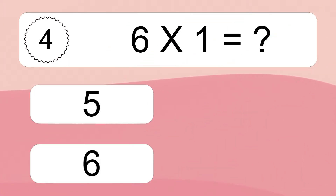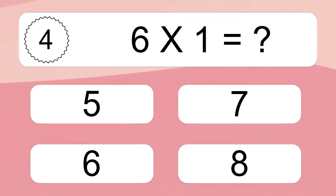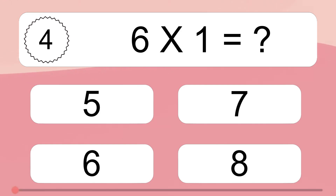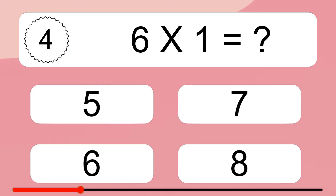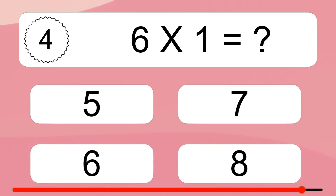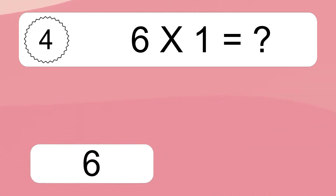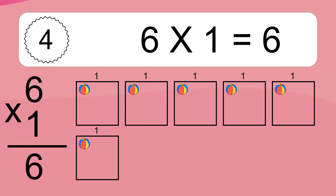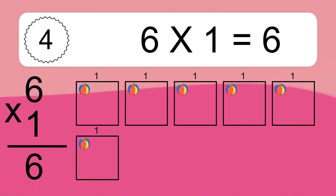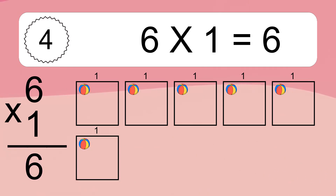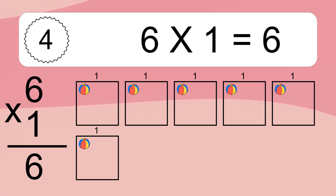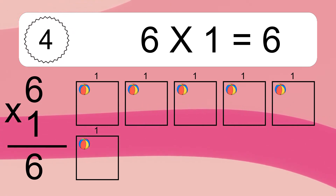Six times one equals what? Six times one equals six. We have six boxes, and each box has one colorful ball inside. If you count all the balls in all the boxes together, you will have six times one balls. This equals six balls.